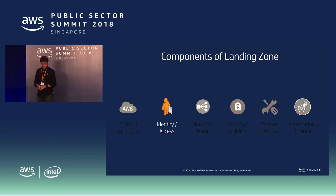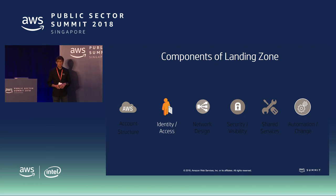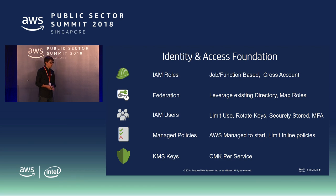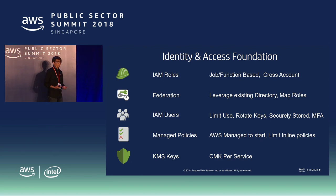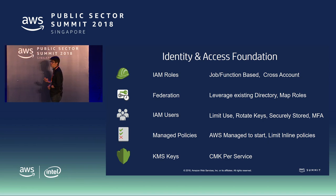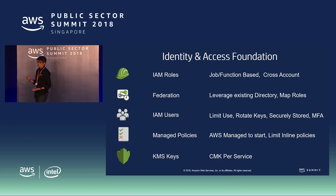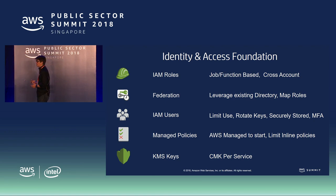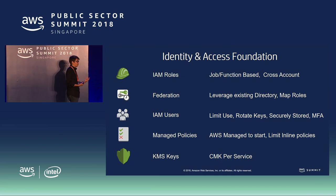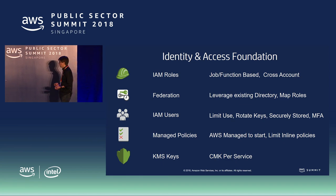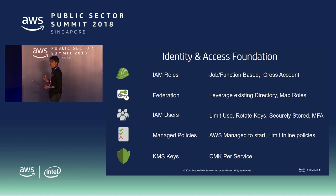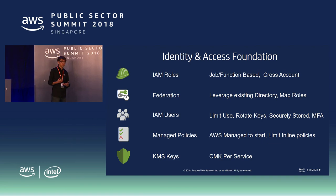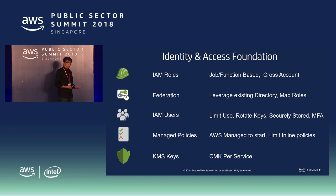Next is identity access management. Once you provision an account, you need to create identities for users to access it. You want to create roles based on certain job functions — for example, a power user, a reader, or a full administrator. Most organizations have some sort of directory, very commonly Active Directory. You need to decide whether to federate with your existing on-premises directory. If you do, users log in using their existing credentials, but you need to map what IAM roles they are provisioning.